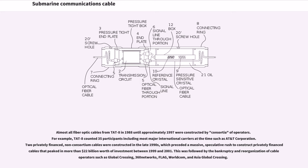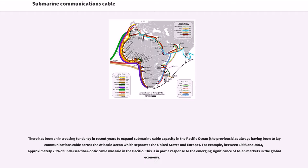Almost all fiber-optic cables from TAT-8 in 1988 until approximately 1997 were constructed by consortia of operators. TAT-8 counted 35 participants including most major international carriers at the time such as AT&T Corporation. Two privately-financed, non-consortium cables were constructed in the late 1990s, which preceded a massive speculative rush to construct privately-financed cables that peaked in more than $22 billion worth of investment between 1999 and 2001. This was followed by the bankruptcy and reorganization of cable operators such as Global Crossing, 360 Networks, Flag, WorldCom, and Asia Global Crossing. Between 1998 and 2003, approximately 70% of undersea fiber-optic cable was laid in the Pacific, in part a response to the emerging significance of Asian markets in the global economy.